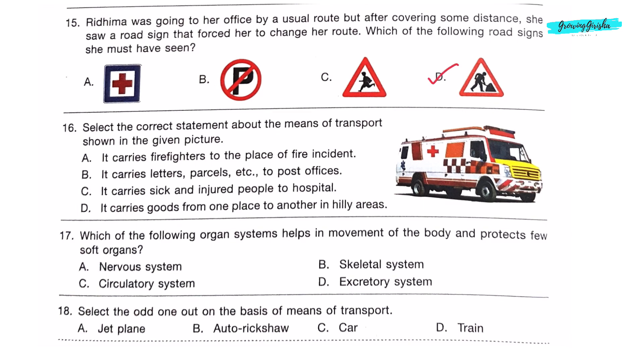Question 16: Select the correct statement about the means of transport shown in the given picture. The given picture is of an ambulance. It carries sick and injured people to hospital. So option C is the correct answer. Question 17: Which of the following organ systems helps in movement of the body and protects few soft organs? Option B: Skeletal system.